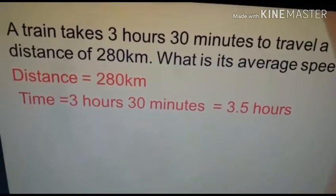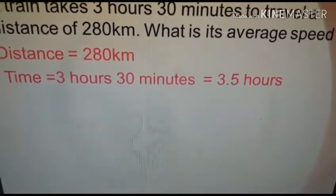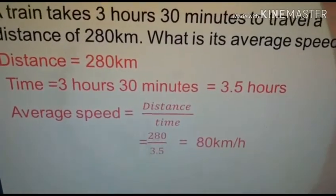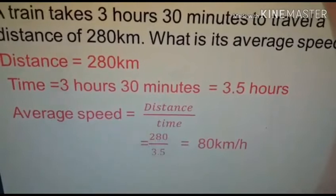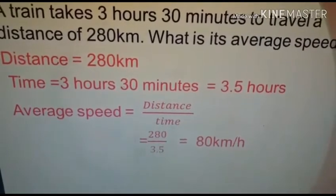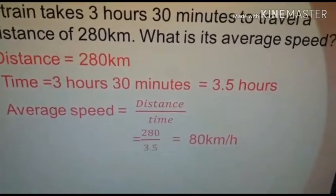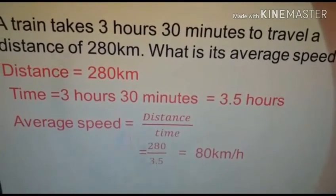30 minutes is 0.5 of an hour, so 3 hours 30 minutes we can make 3.5 hours. We can use the formula. Average speed is distance by time. It is equal to 280 over 3.5. It is 80 km per hour.